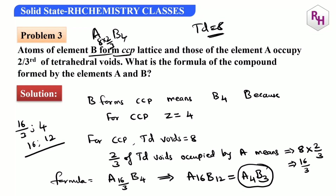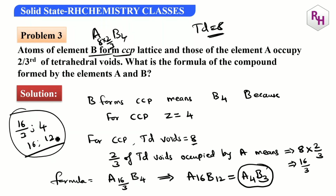Two-thirds of the tetrahedral voids are occupied, and there are 8 tetrahedral voids total, giving 16/3 for A. The ratio of A to B is 16 to 12, simplifying to 4 to 3. So A4B3 is the formula.